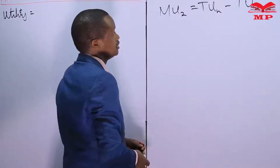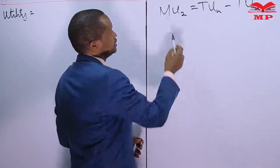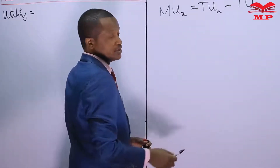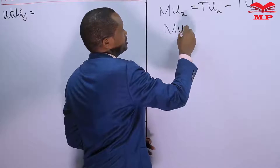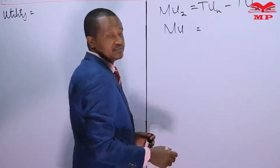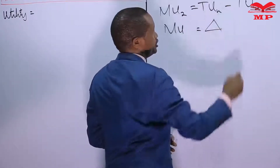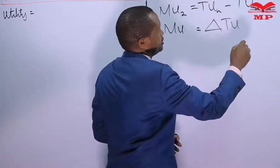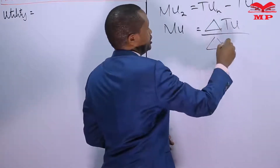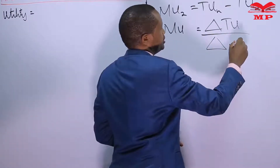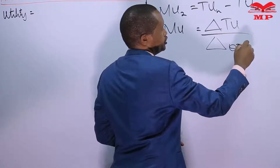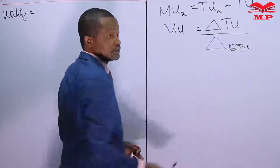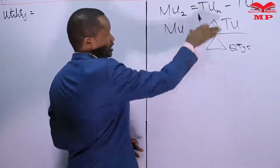That is one way of computing the marginal utility using the total utility. Another way is to take the change in total utility divided by the change in quantity consumed. You can refer to our last video where we used an illustration and worked this out.